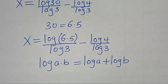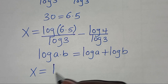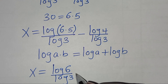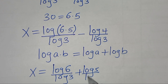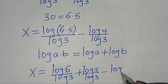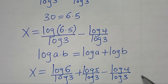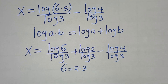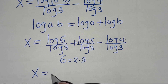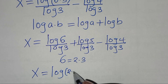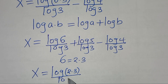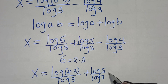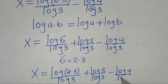Applying this logarithm property, we have x equal to log 6 over log 3, then plus log 5 divided by log 3, subtract log 4 divided by log 3. Now we can express 6 as 2 times 3, so that x is the same thing as log(2 times 3) over log 3, then plus log 5 over log 3, subtract log 4 over log 3.